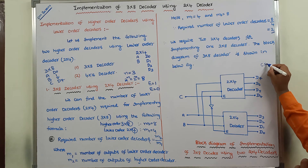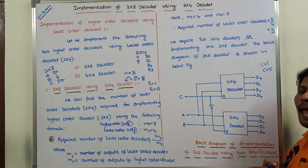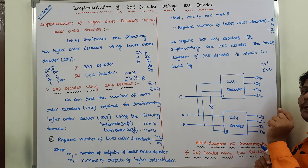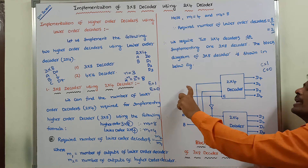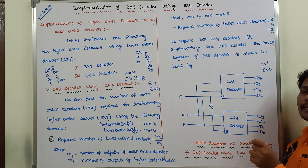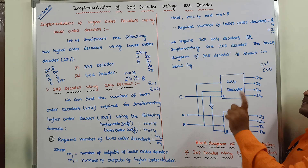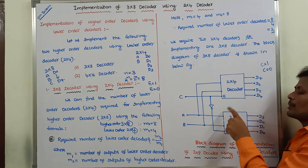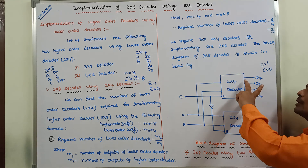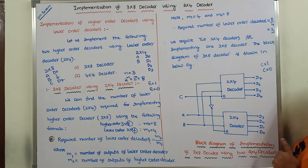With 3 inputs and 8 outputs: when C equals 1, the second 2 by 4 decoder is active and selects among D4 to D7. When C equals 0, the first 2 by 4 decoder is active and selects among D0 to D3. The third input variable C acts as the enable control, deciding which of the two decoders is active at any given time. Among the two 2 by 4 decoders, only one is active at a time.